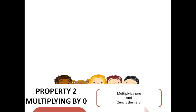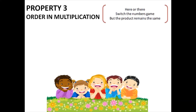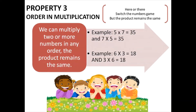Let's go to property number three: order in multiplication. Here or there, switch the numbers game, the product remains the same. We can multiply two or more numbers in any order and the product remains the same. If we have two numbers, we can change their order. For example, five times seven is thirty-five and seven times five is also thirty-five.